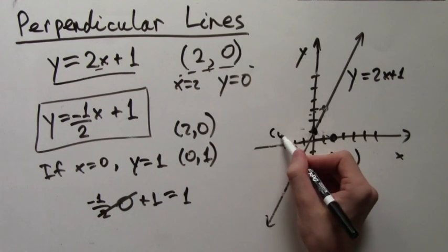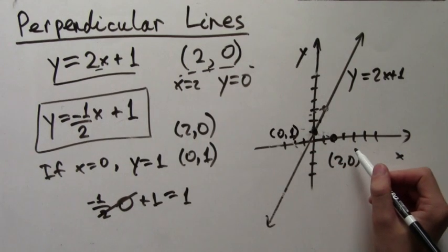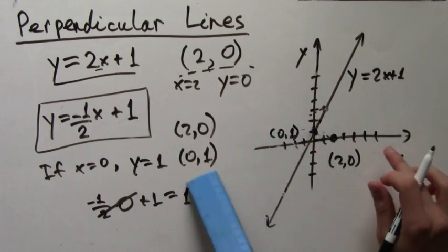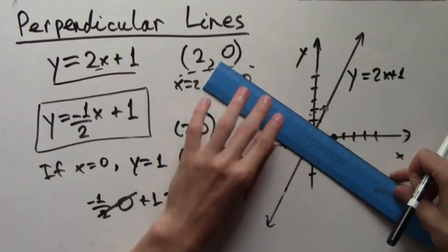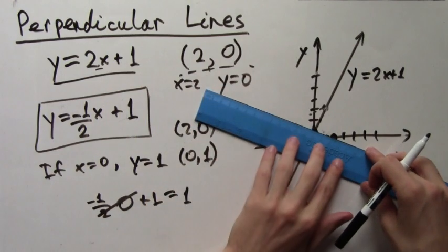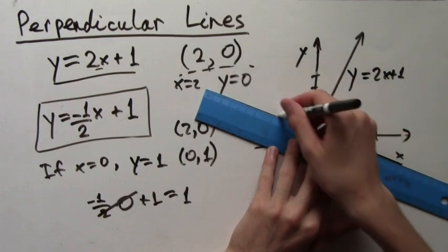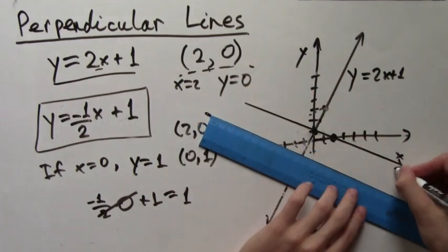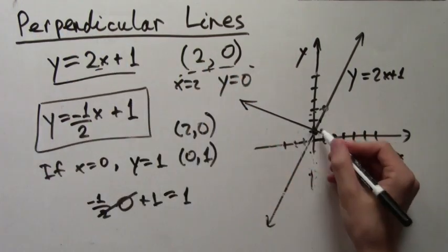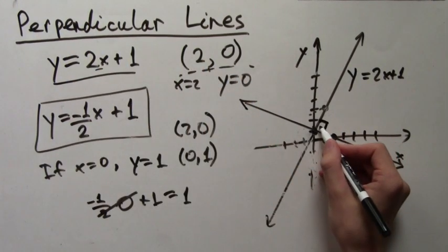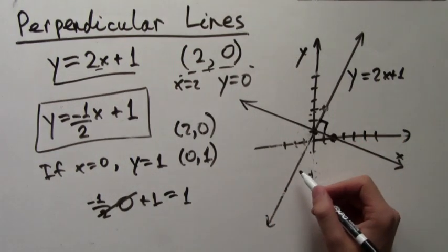And we can use a ruler to connect these points. So here it is. And there's the line. And sure enough, it is perpendicular. Now, it might not look perfectly perpendicular as it is now, but that is only because our drawing was imperfect. But thank you for watching this video lecture.